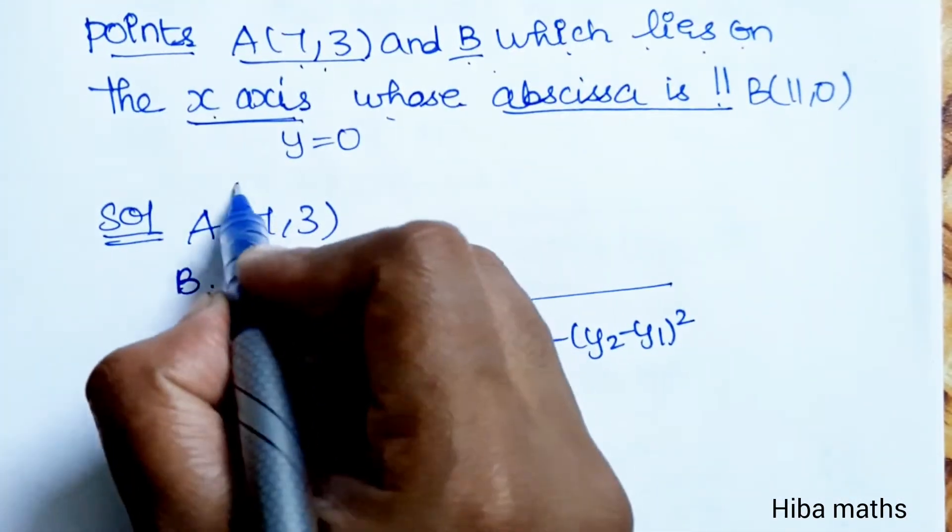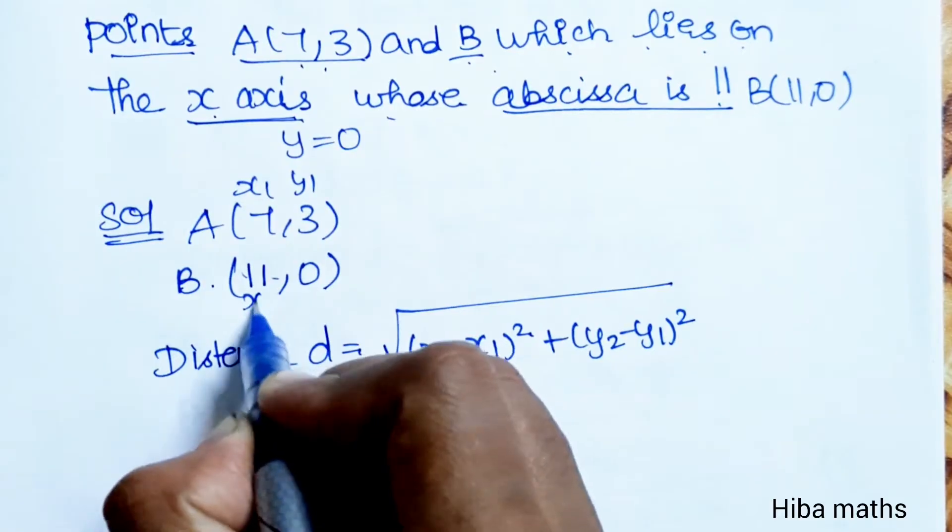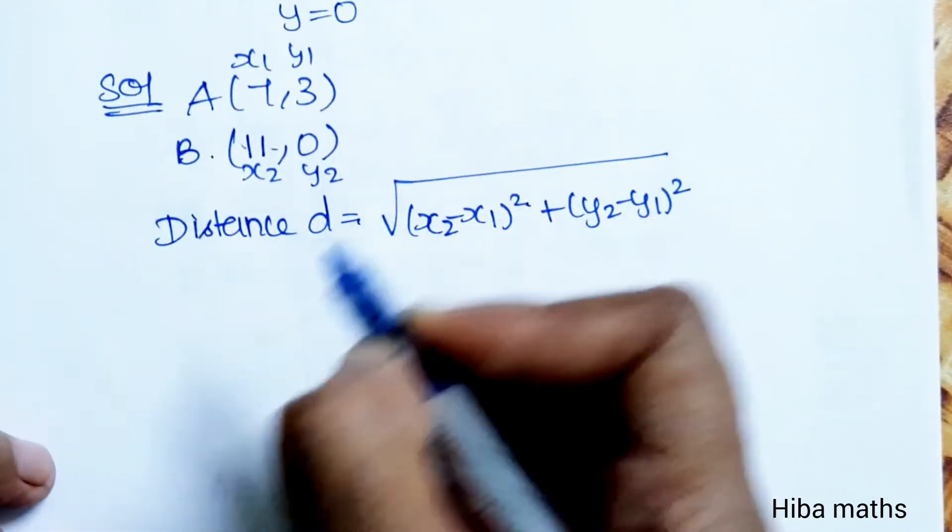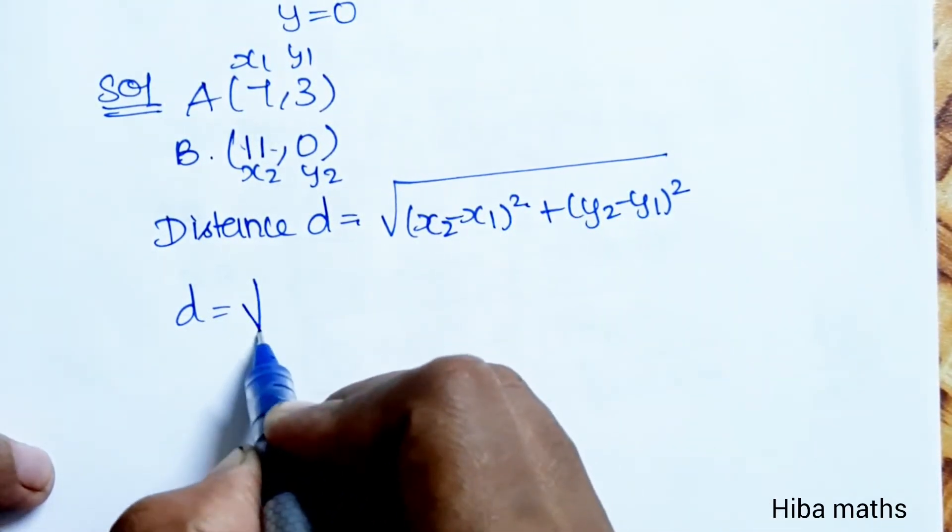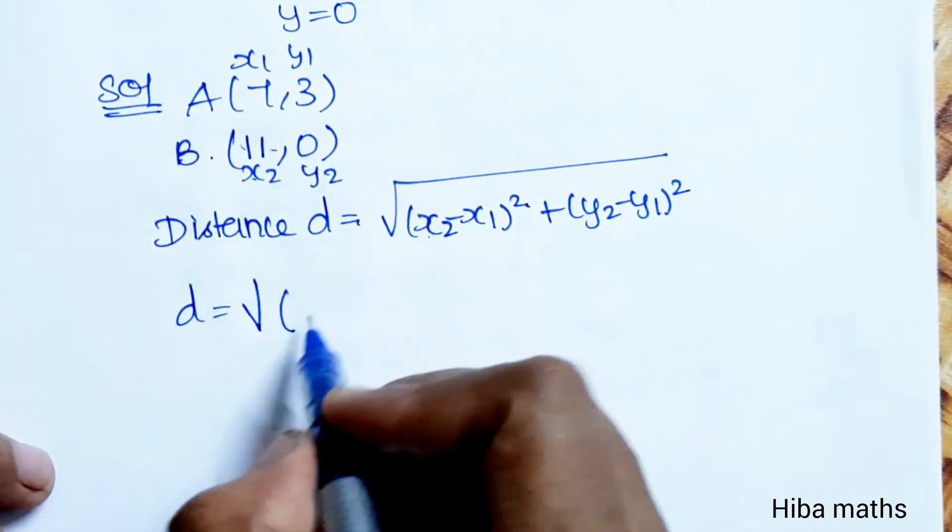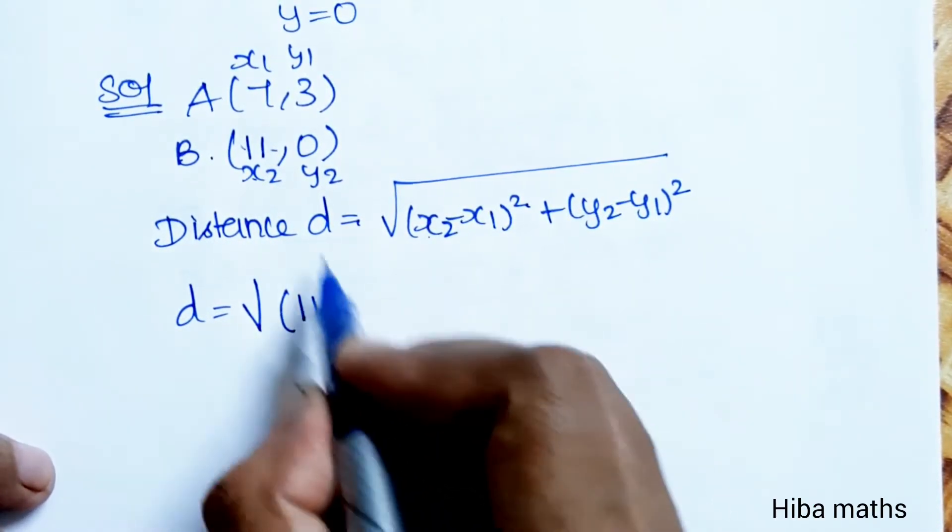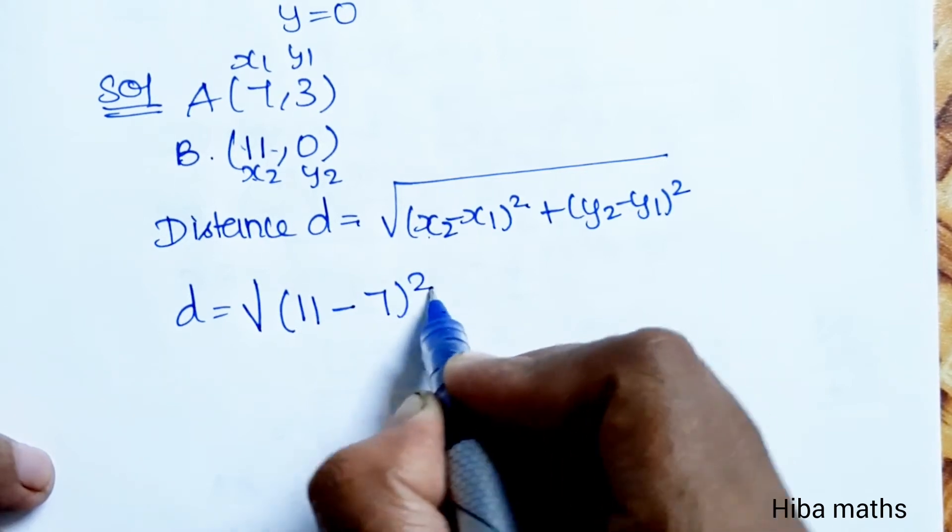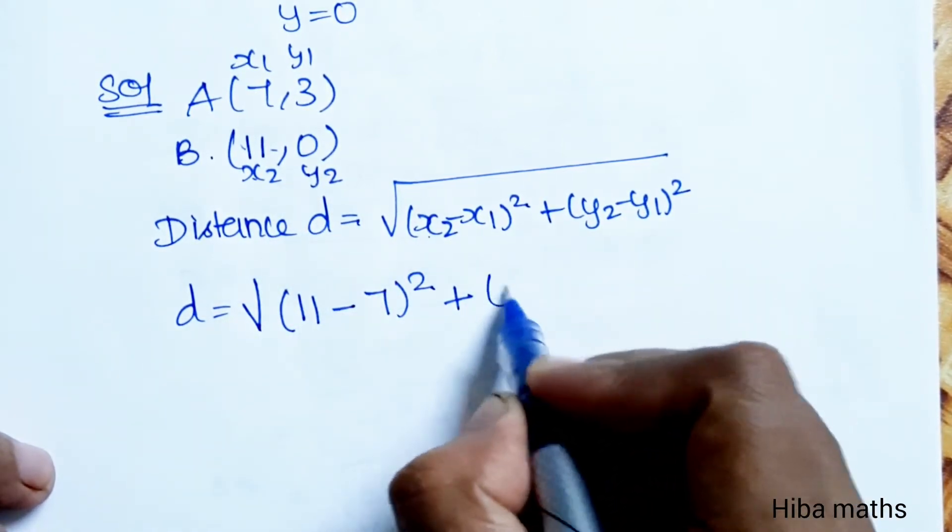So AB equals the square root of: x2 which is 11, minus x1 which is 7, whole square, plus y2 which is 0, minus y1 which is 3, whole square.